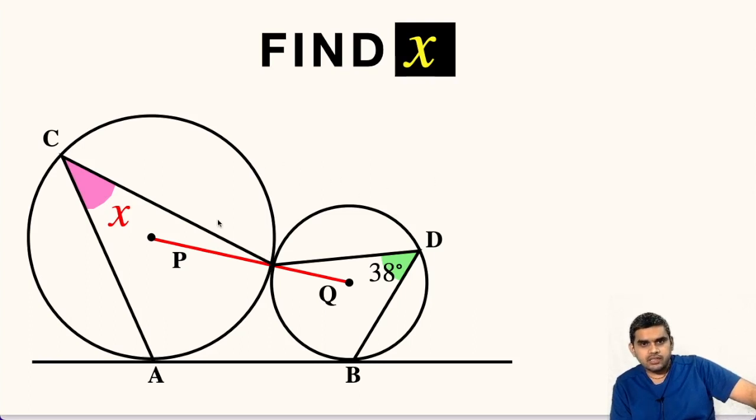In this question, two circles are shown. They are touching each other at a common point. They have centers at point P and Q respectively. Also, there is a common tangent line L which is tangent to these two circles at points A and B respectively.